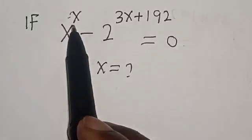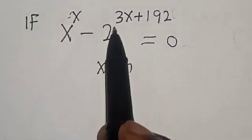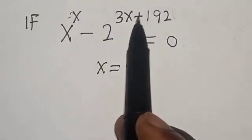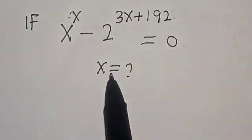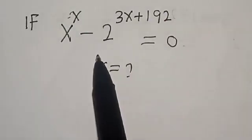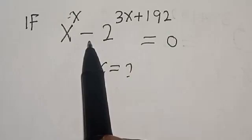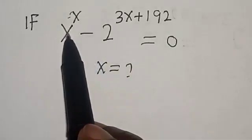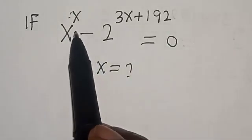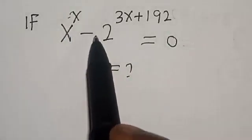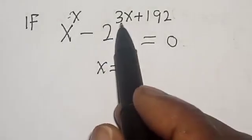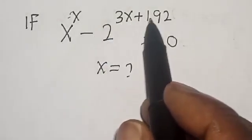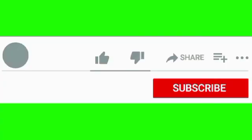If s raised to power s, minus 2 raised to power 3s plus 192, is equal to 0, what is the value of s? Welcome to Magis. In this class, we want to find the value of s from this equation: s raised to power s minus 2 raised to power 3s plus 192 is equal to 0.